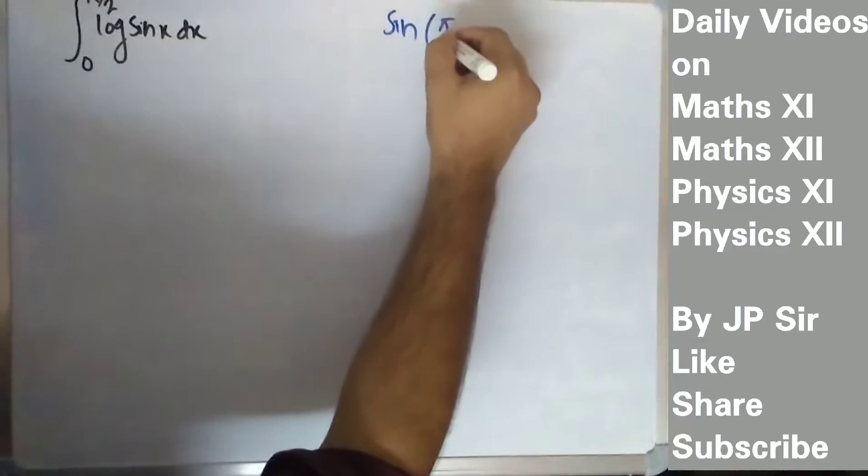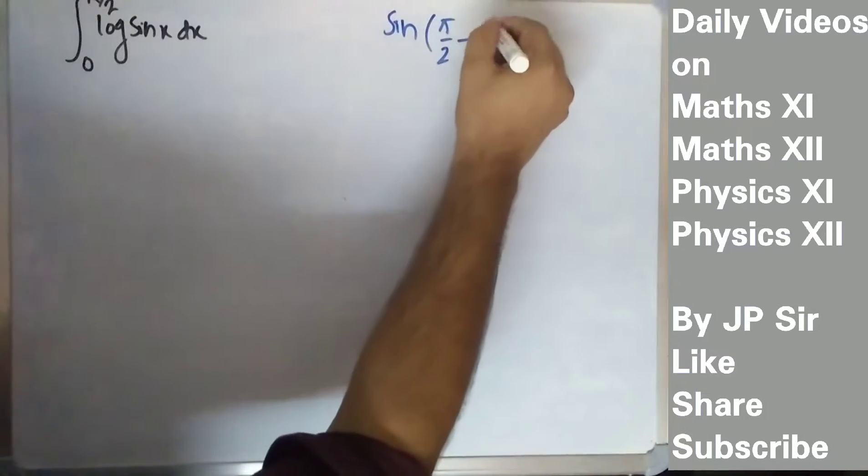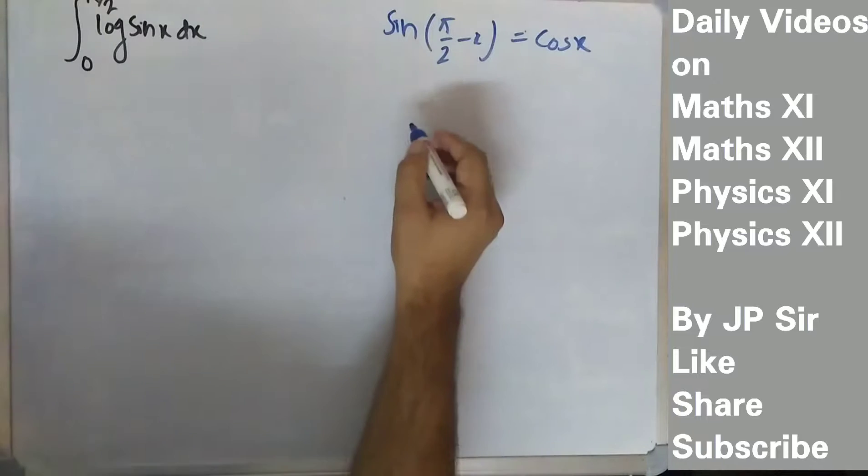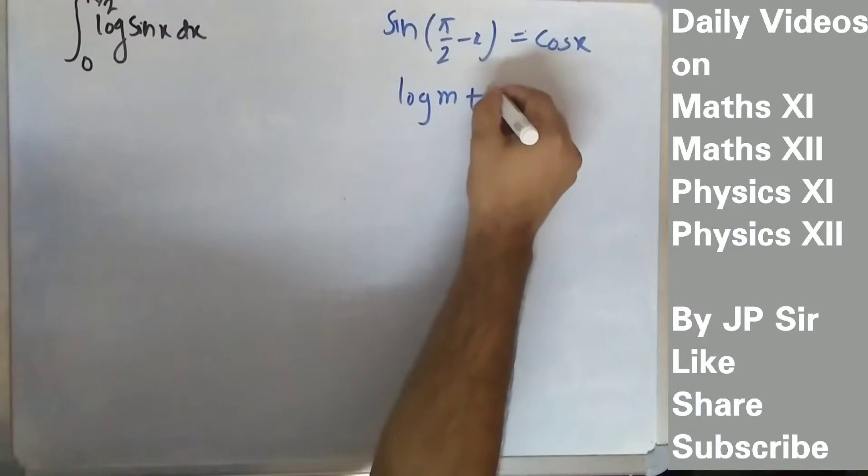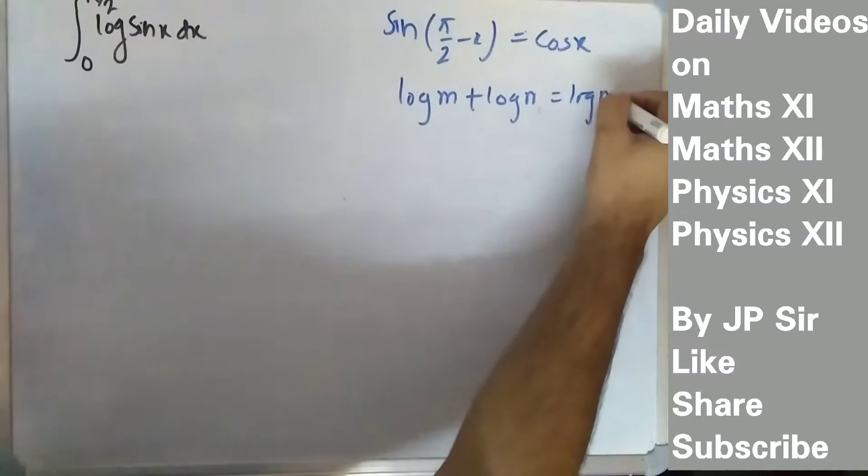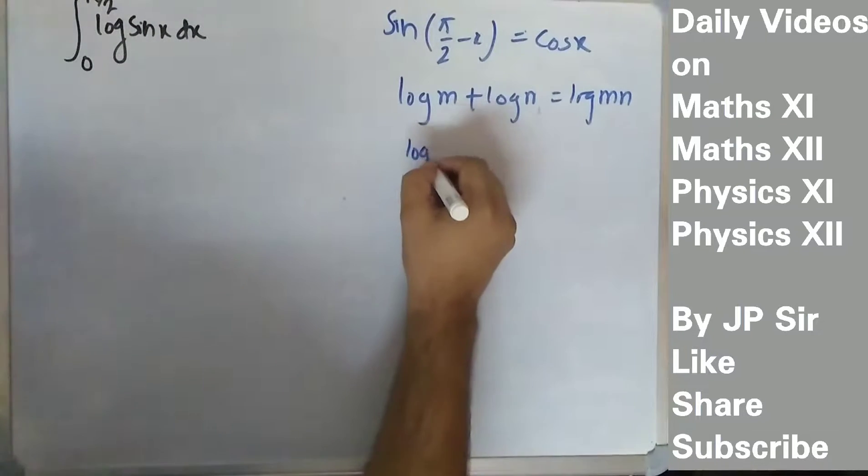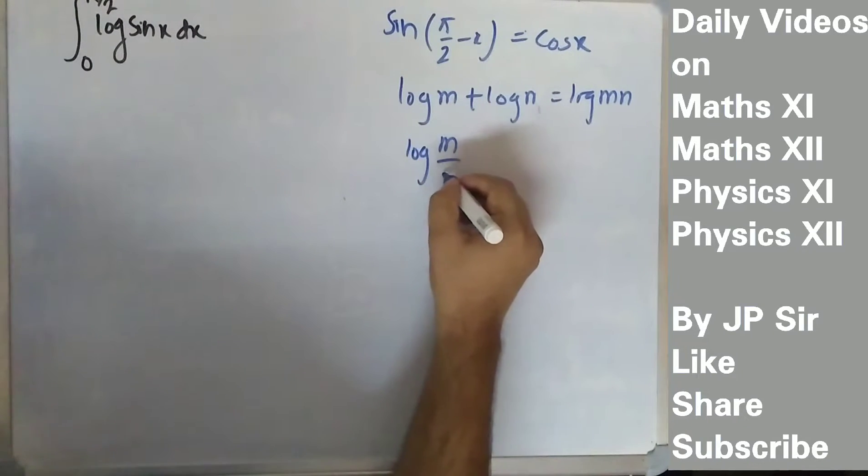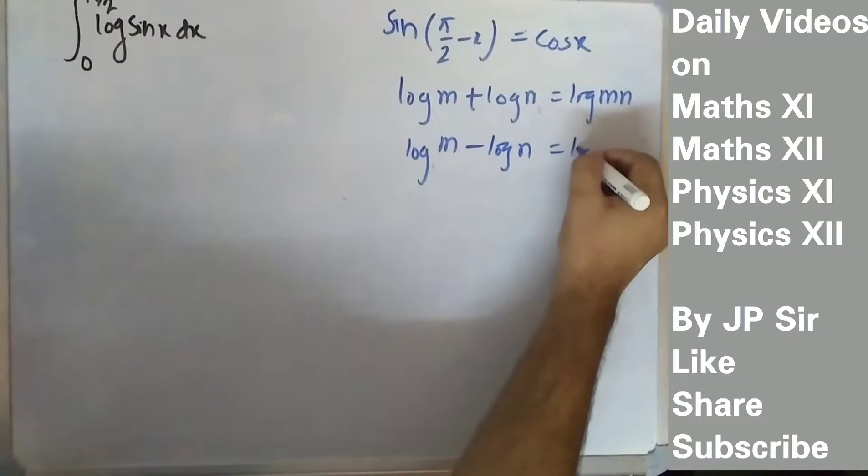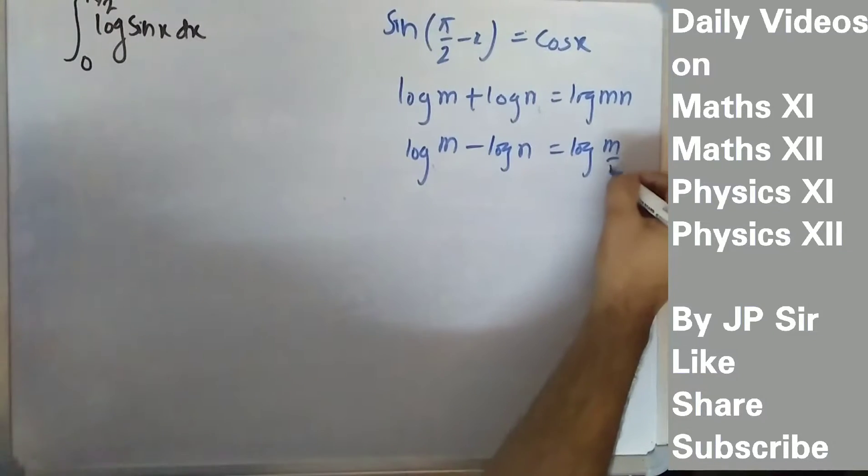You should know that sin 90 minus x is cos x, where 90 means pi by 2. Second property: log m plus log n is log mn, and log m minus log n is log m upon n.